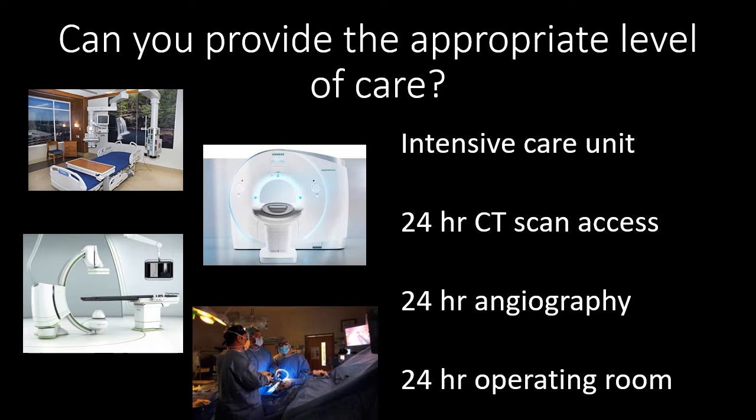You need an intensive care unit. You must have 24-hour access to a CT scan. You need 24-hour angiography, often provided by an interventional radiology service. You don't need a 24-hour operating room. That is why there is a trauma system or trauma network in most states, and patients are very quickly transferred to higher levels of care when they're found to be unstable or the victims of blunt trauma.